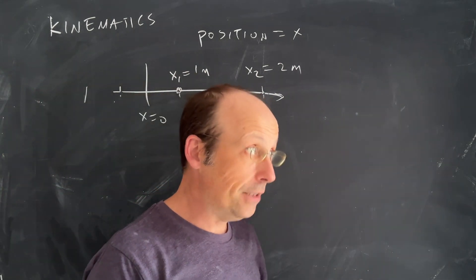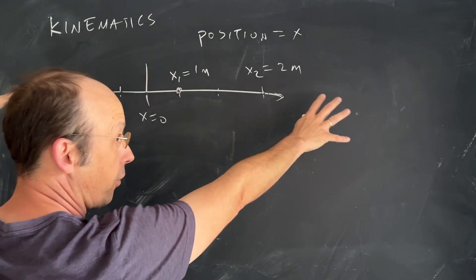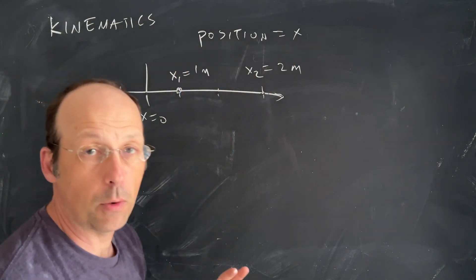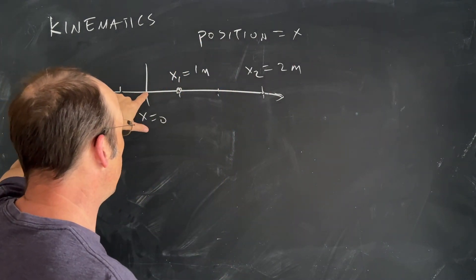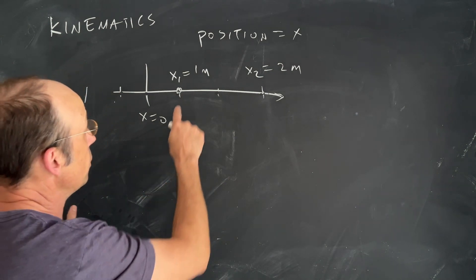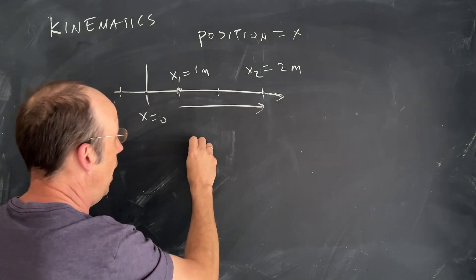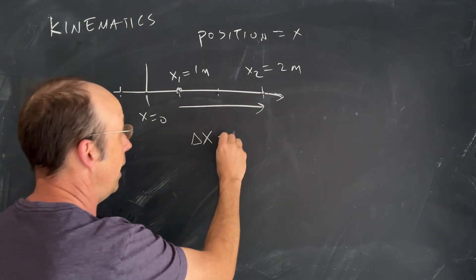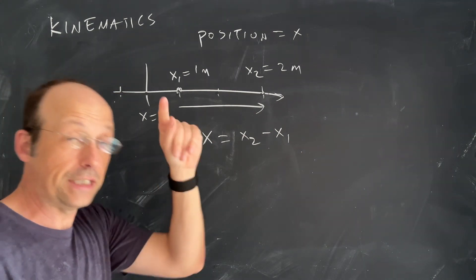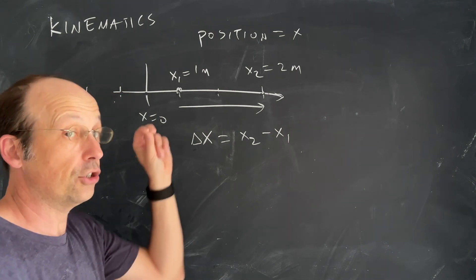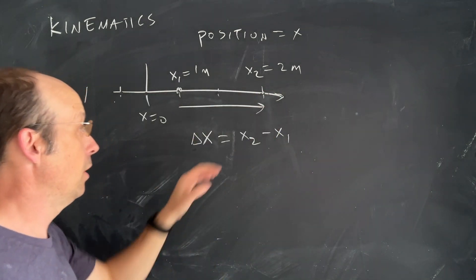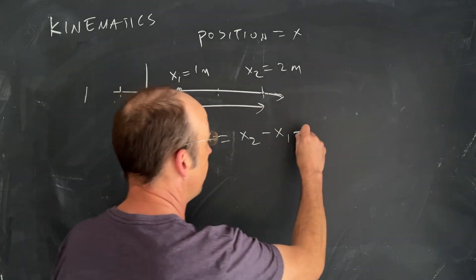Position depends on where you pick your origin. The x-axis is not real — it's a figment of our imagination; we pick it to be wherever we want. So if I move the location of my origin, my values of position change. But now what I want to look at is what we call displacement: delta x is x2 minus x1. You see this Greek letter delta a lot. In physics, delta always means change — so it's the final x minus initial. Change is always final minus initial. We call this the displacement.